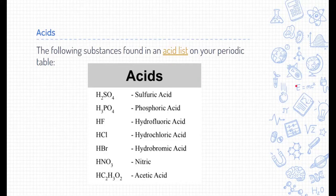Last are acids, and quite frankly they're really easy. If you look at the list of acids on your periodic table, it has all of the formulas written out for you. You just need to recognize to go and look at the list to have the formulas written.